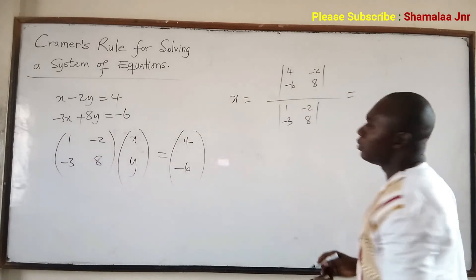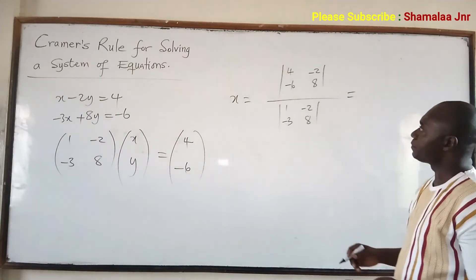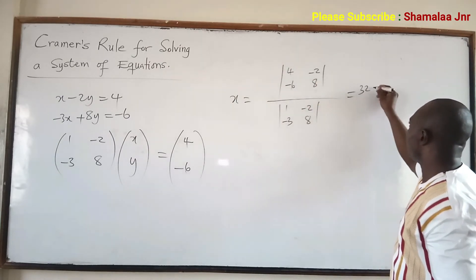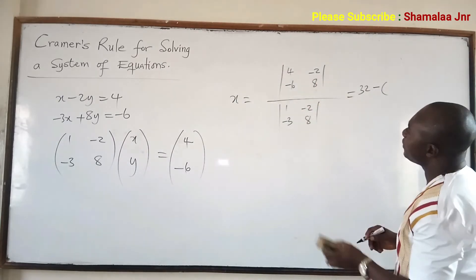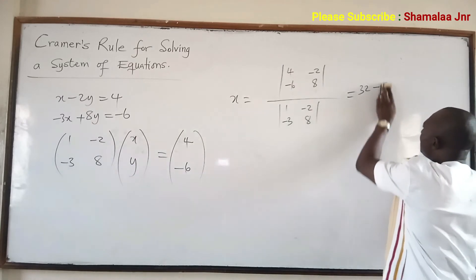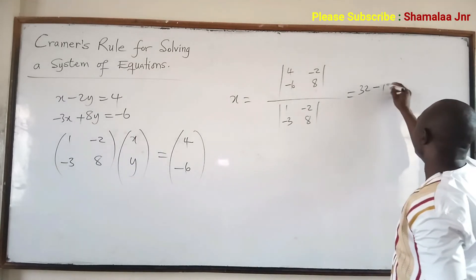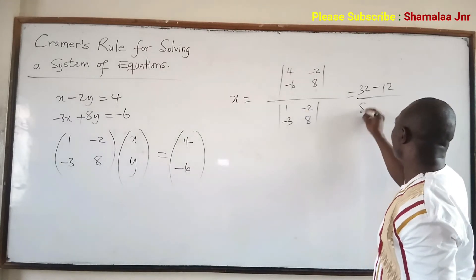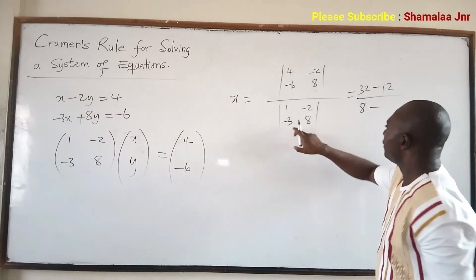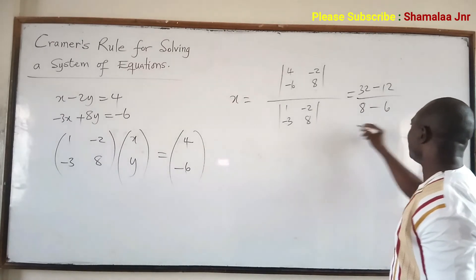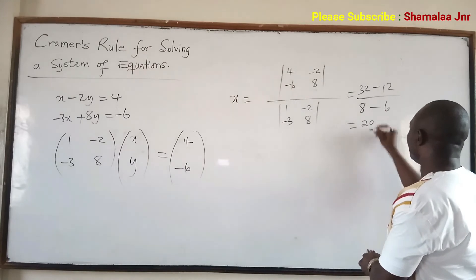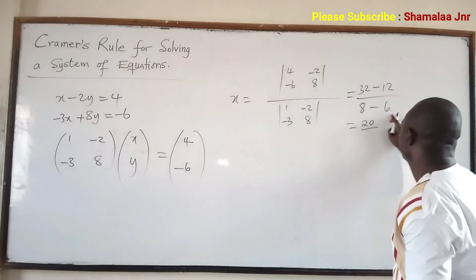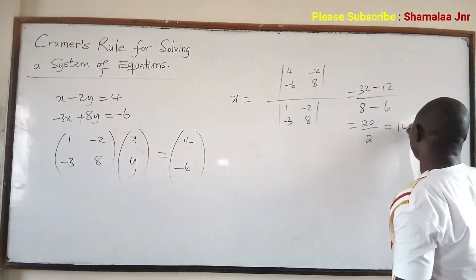Now it equals: find the determinant of the numerator matrix. 8 times 4 is 32, minus negative 6 times negative 2, which is positive 12. So the numerator is 32 minus 12 equals 20. All over 8 times 1 is 8, minus negative 3 times negative 2, which is 6. That gives 8 minus 6 equals 2. So x equals 20 over 2, which is 10.